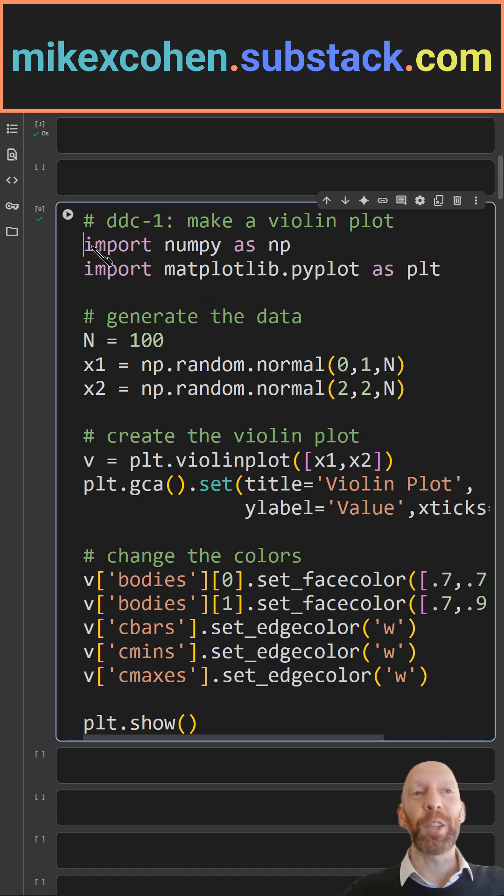So we need NumPy and Matplotlib. Here I generate 100 samples from a normal distribution. For data set one, we have a mean of zero and a standard deviation of one, and for data set two, the mean and the standard deviation are both two.